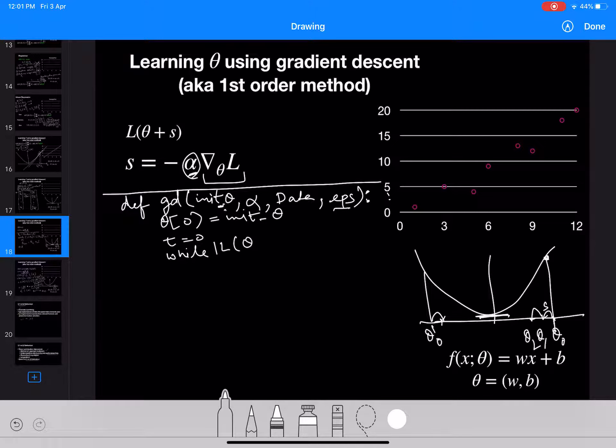theta t minus L of theta t plus one is greater than epsilon, we will iterate. So do t equals t plus one.